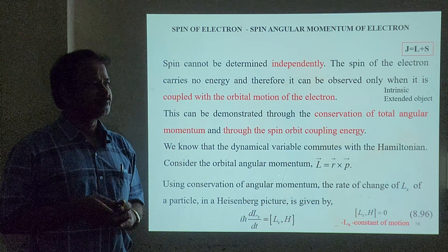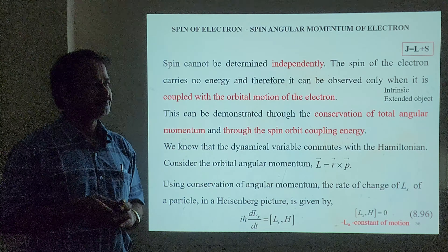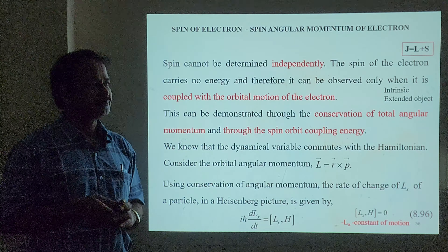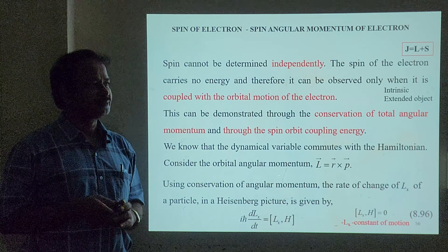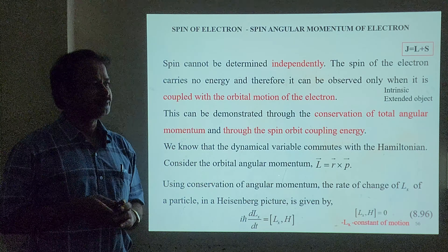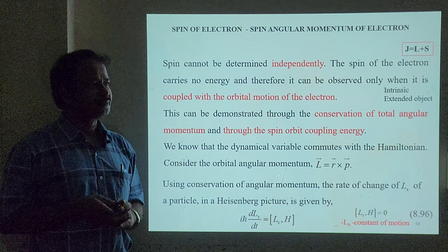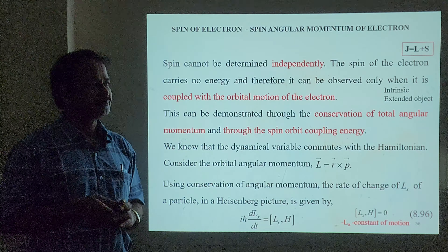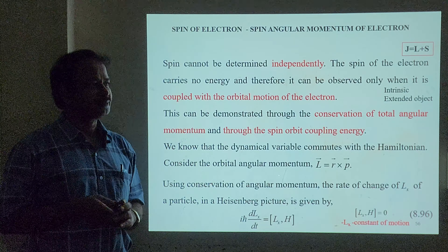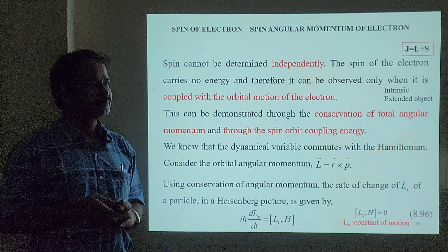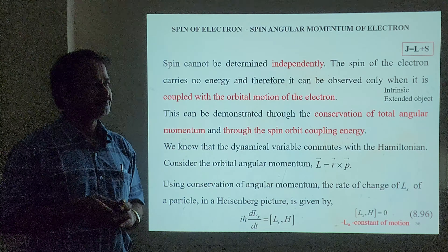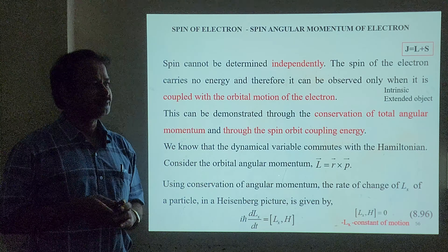Spin cannot be determined independently. The spin of the electron carries no energy and therefore can only be observed if it is coupled with the orbital motion of the electron — the orbital angular momentum. So S alone has no meaning; meaning exists only when associated with L. This is demonstrated through consideration of total angular momentum and through spin-orbit coupling energy.